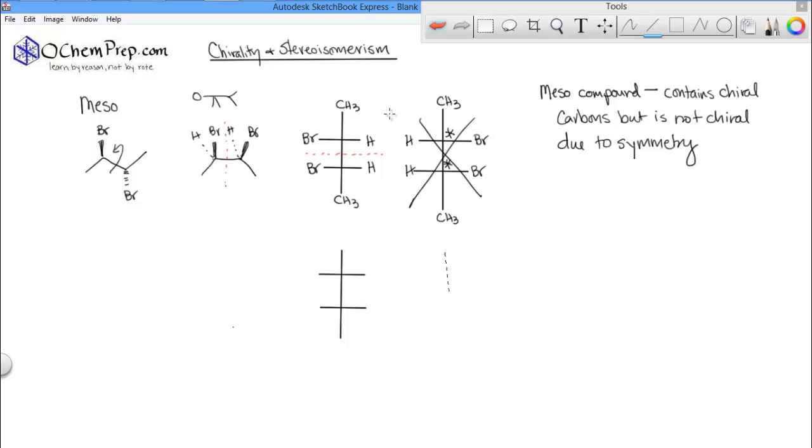So, I'm just going to set up my Fischer projections. So, when you have the bromines on opposite sides of the Fischer projection, these are indeed chiral, and you would put R's and S's on them. So, I'm going to do the mirror image of both of these.